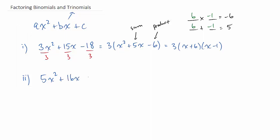The difference with this one is we can't actually remove that 5 because it doesn't go in evenly to 16 and 12. So what we do instead is we multiply the a by the c term to get 60. And then we say, what multiplies to 60 and adds up to 16?